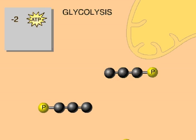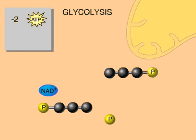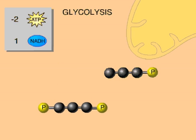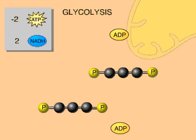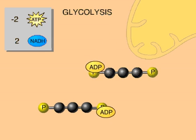Chemical bonds are broken, and NAD+ picks up electrons and hydrogen ions, forming NADH. The energy released is used to attach phosphate groups to ADP, finally making some ATP.